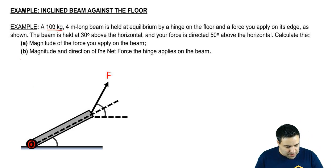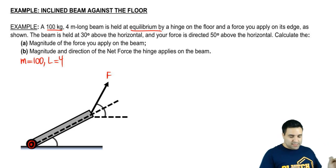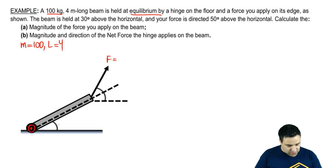We have a 100 kilogram beam, so mass equals 100. It has length of 4 meters, and it's held at equilibrium. This means all the forces are zero, add up to zero, and all the torques add up to zero. By a hinge down here, and by a force that you apply F right here. The beam is held at an angle of 30 degrees above the horizontal. So this angle here is 30. I'm going to put the 30 in here so that I can draw the mg in here.